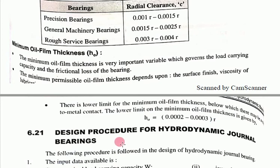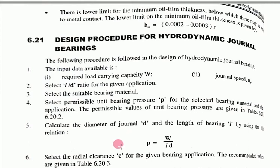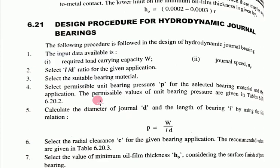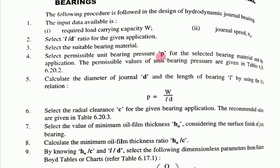The minimum oil film thickness Ho should be between 0.0002 and 0.002 mm. Now the design procedure for hydrodynamic journal bearing: the input data includes load (W) and journal speed. According to this, select the L/D ratio for the given application, then select a suitable bearing material, then select the permissible unit bearing pressure P = W/(L·D) to find the journal diameter D and bearing length L.